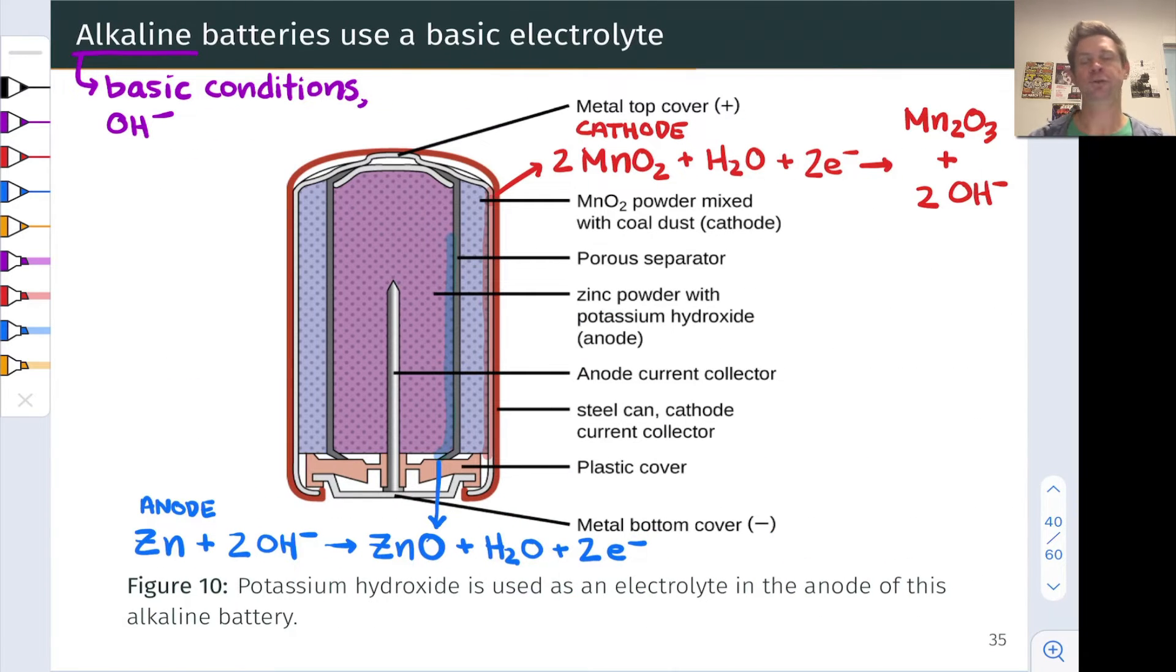Alkaline batteries use a similar redox process to the dry cell, but are under basic conditions, meaning there's quite a bit of hydroxide around and there's quite a bit more water. So these you've got to be a little bit more careful with. Over time, they'll eventually leak this strongly basic hydroxide solution and corrode. And you may have seen this if you found batteries in an old remote control or something along those lines.